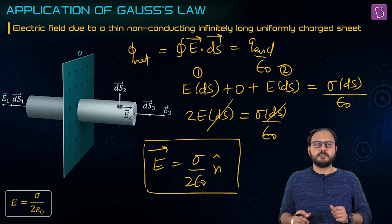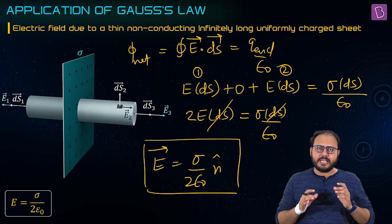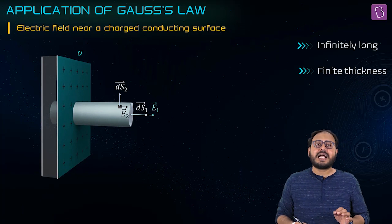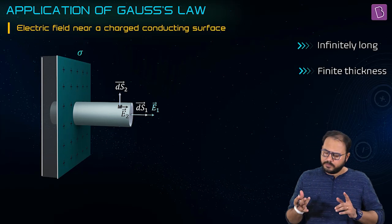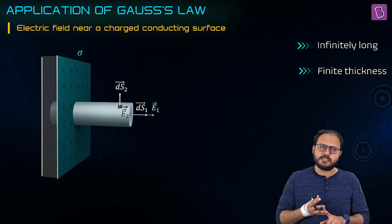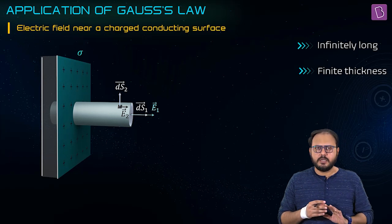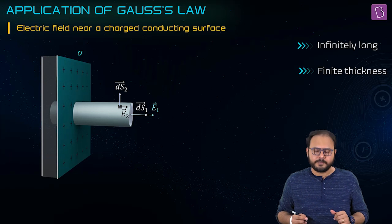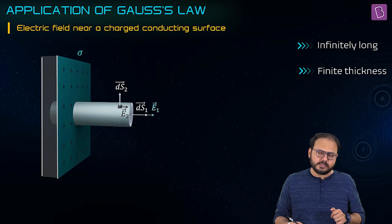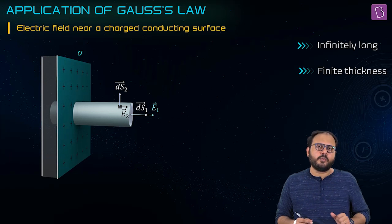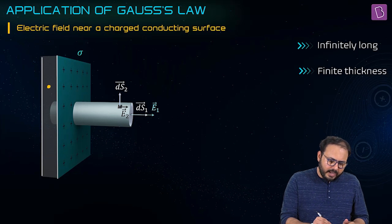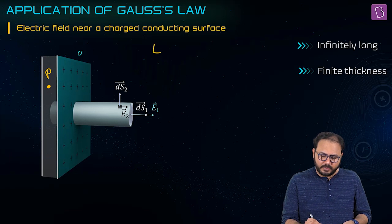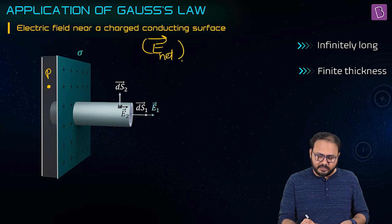Now hold on — arch your back, take a deep breath, because this part is beautiful and conceptual. What if this sheet becomes conducting suddenly? What changed? Is it uniformly charged? Yes. Is it infinite in size? Yes. Is it incredibly thin, wafer thin? Yes. What's the only difference? The non-conducting nature becomes conducting nature. Can you see the diagram from the side view? I have drawn it in an exaggerated thick way. If I mark a point P inside — what is the field at point P? Point P is inside the meat of the conductor — it's zero.